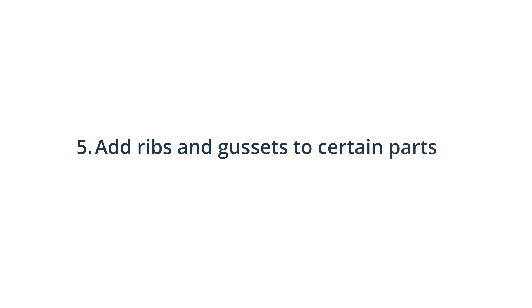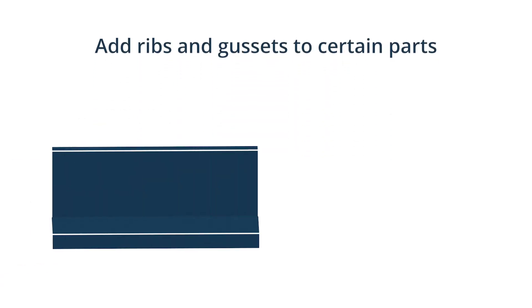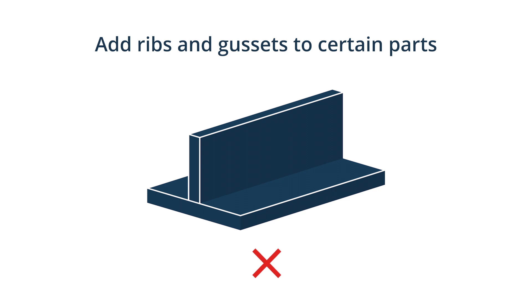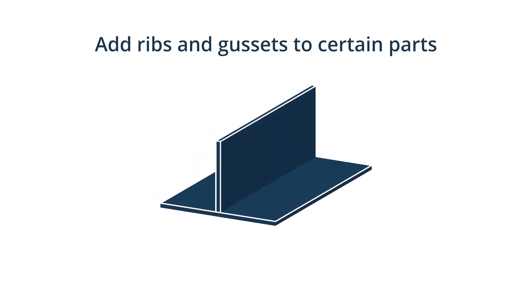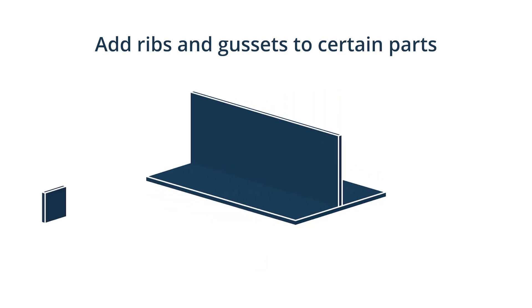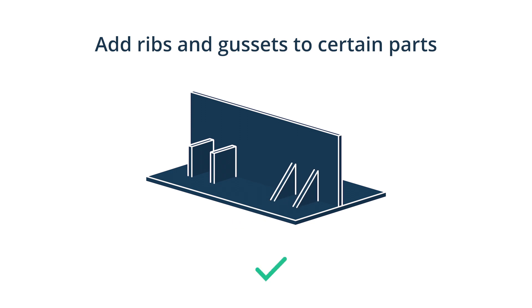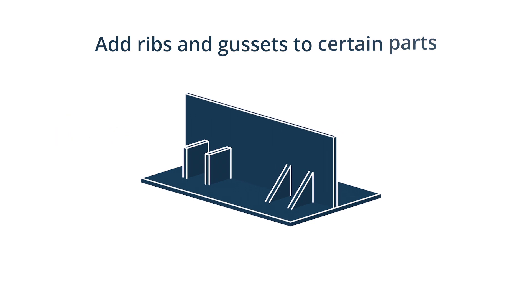5. Add ribs and gussets to certain parts. We recommend adding ribs and gussets to parts instead of increasing their thickness to strengthen them. They also help to eliminate cosmetic defects like warping, sink and voids. However, if designed incorrectly, this can lead to the permanent bending of some sections. The warping can be reduced by keeping the rib thickness between 50 to 60% of the thickness of the wall it is attached to.